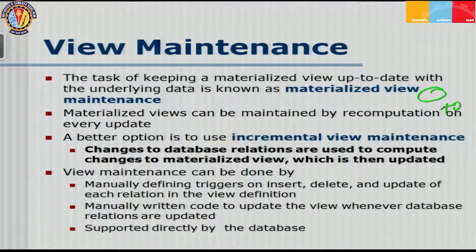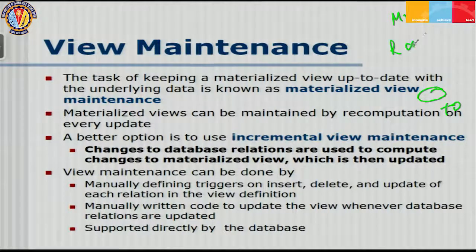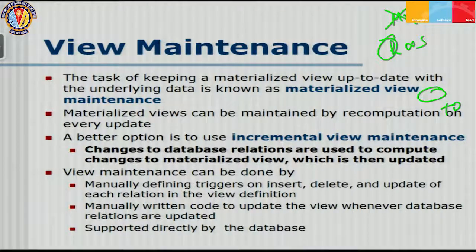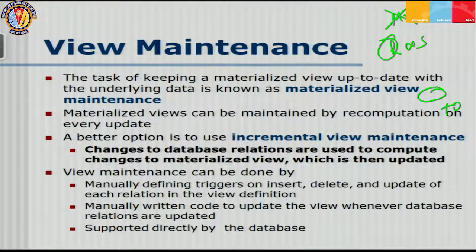The task of keeping a materialized view up to date with the underlying tables is known as materialized view maintenance, or simply view maintenance. Materialized views can be maintained by recomputation on every update — for example, dropping and recreating the join — but if r and s are very large relations and you're only inserting one tuple, that's not a good idea. A better option is to use incremental view maintenance, where changes to database relations are used to compute changes to materialized views, which are then updated.